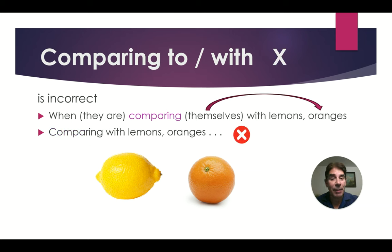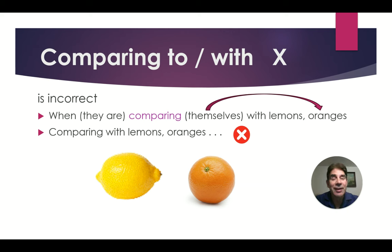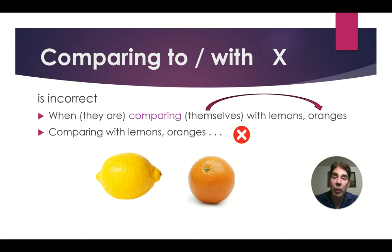We do not say 'comparing to' or 'comparing with' — that would be incorrect. For example: 'When they are comparing themselves with lemons, oranges are sweeter' doesn't make sense. Oranges do not do the comparison; people do. So 'Comparing with lemons, oranges are sweeter' would be incorrect.